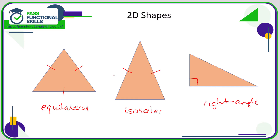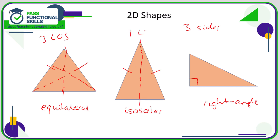All triangles have three sides. An equilateral triangle is a regular triangle, so it has three lines of symmetry. An isosceles triangle has one line of symmetry. A right-angle triangle has zero lines of symmetry, unless it is also isosceles — if the two shorter sides are equal, it would have one. All triangles have three corners, three angles, and three sides, and the angles inside a triangle must all add up to 180 degrees.